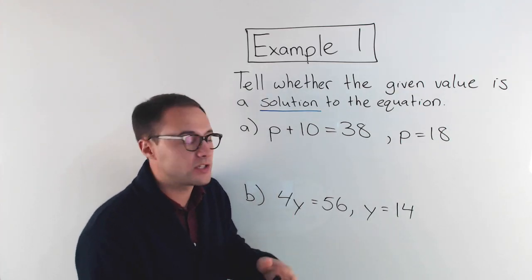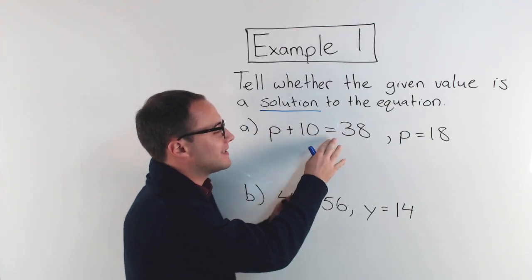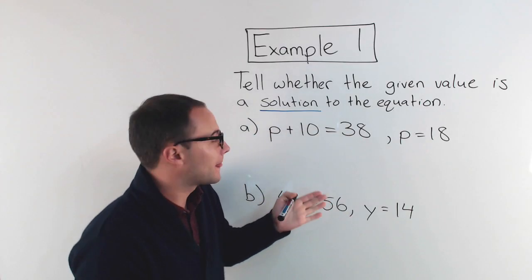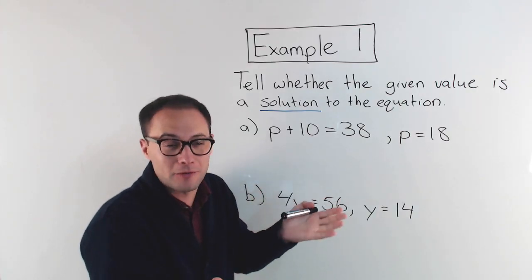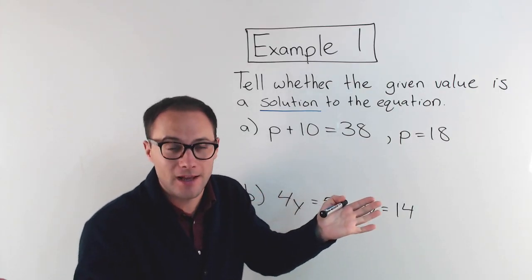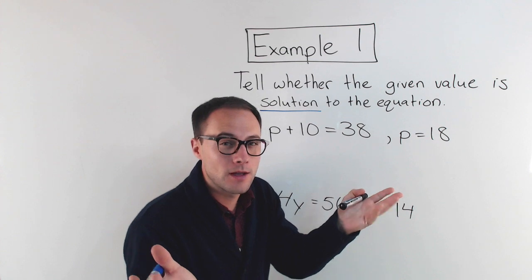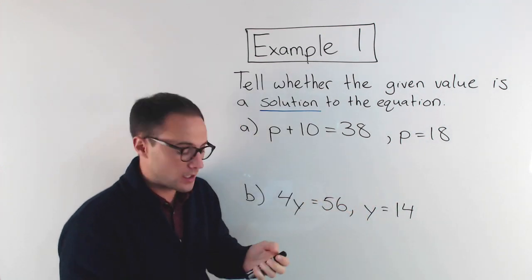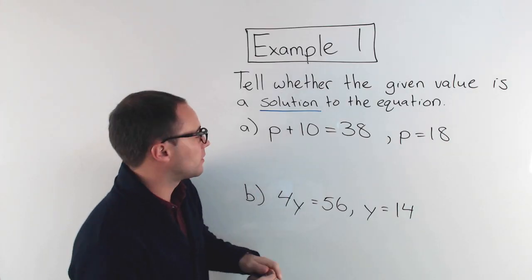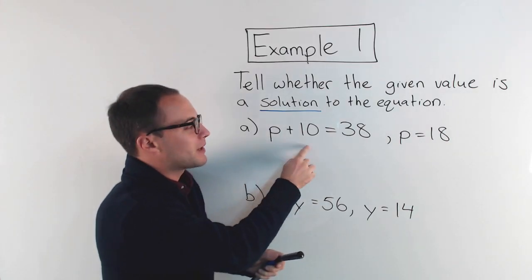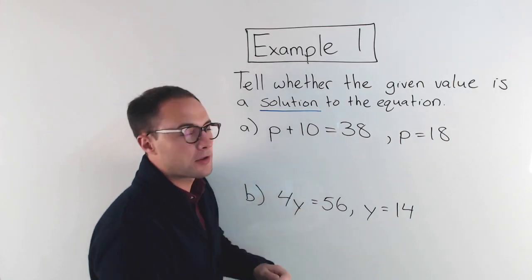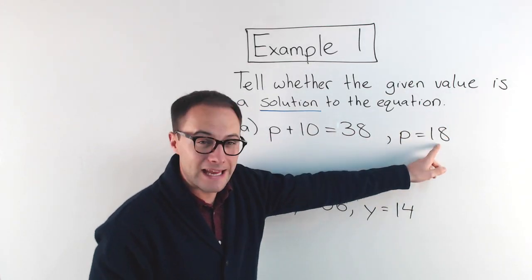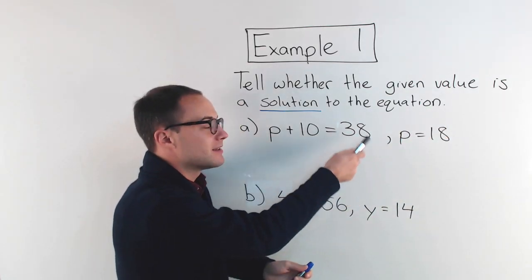With an equation, one side is equal to another side. For it to be true, this side has to be equal to this side. If they're not equal, then it's not an equation, and that would not be a solution. So let's see with the first one. For a: p plus 10 is equal to 38, if p is 18. So we're trying to see if 18 is a solution to this equation.